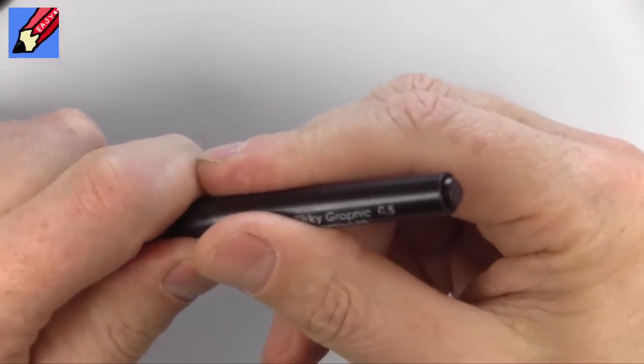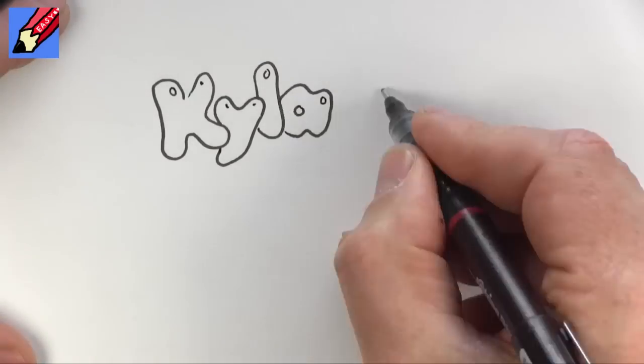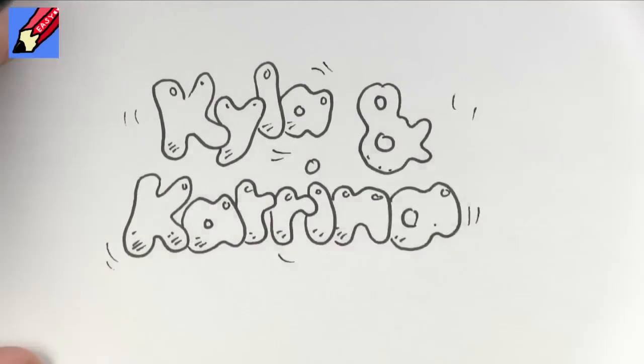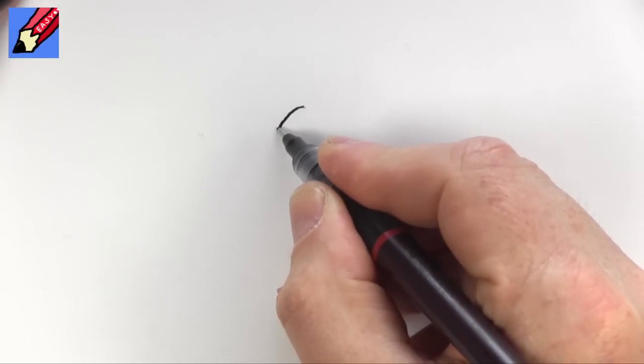Now Draw Stuff Real Easy viewer Ben Payne asked can you draw a bubble named Kyla and Katrina? I think what you actually mean is can I do it in bubble writing but it gave me the idea.